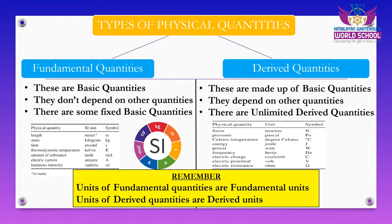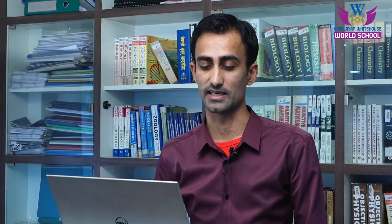Here are some physical quantities with their SI units: length is measured in meter, mass in kilogram. Other fundamental quantities include time, thermodynamic temperature, amount of substance, electric current, and luminous intensity. Their SI symbols are kg, meter, second, ampere, kelvin, mole, and candela respectively.